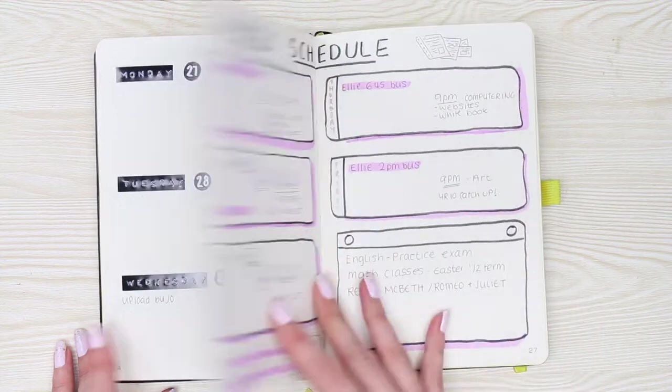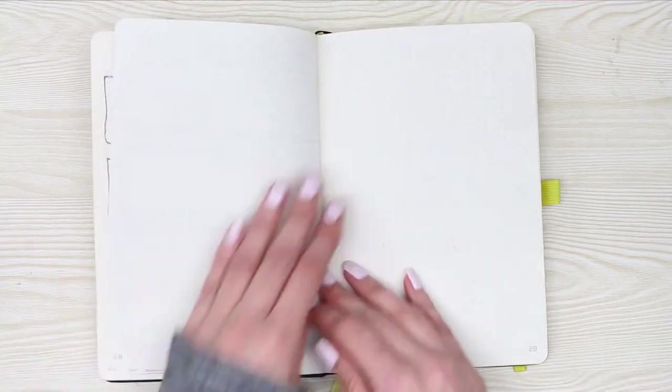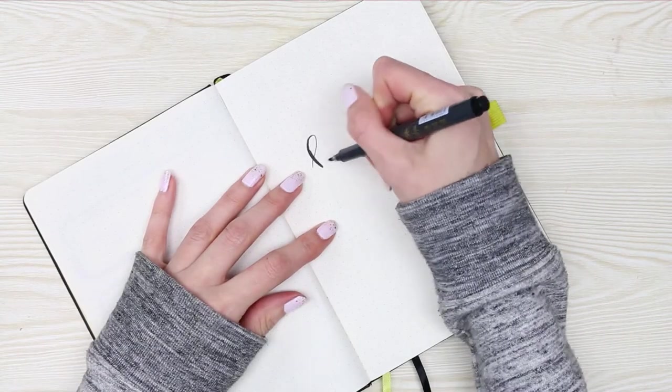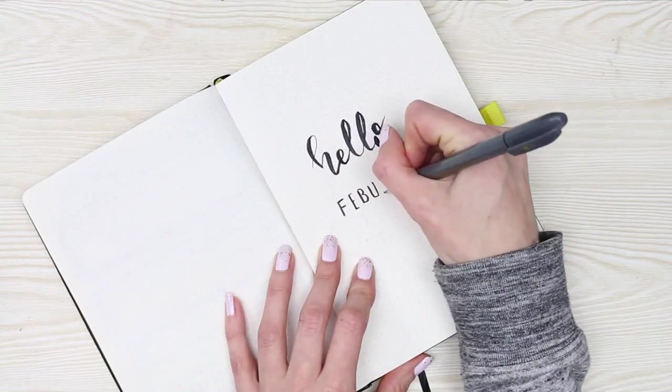Now we can get on into our February setup. I'm starting with my title page as always, and I do normally write 'hello' and then the name of the month.